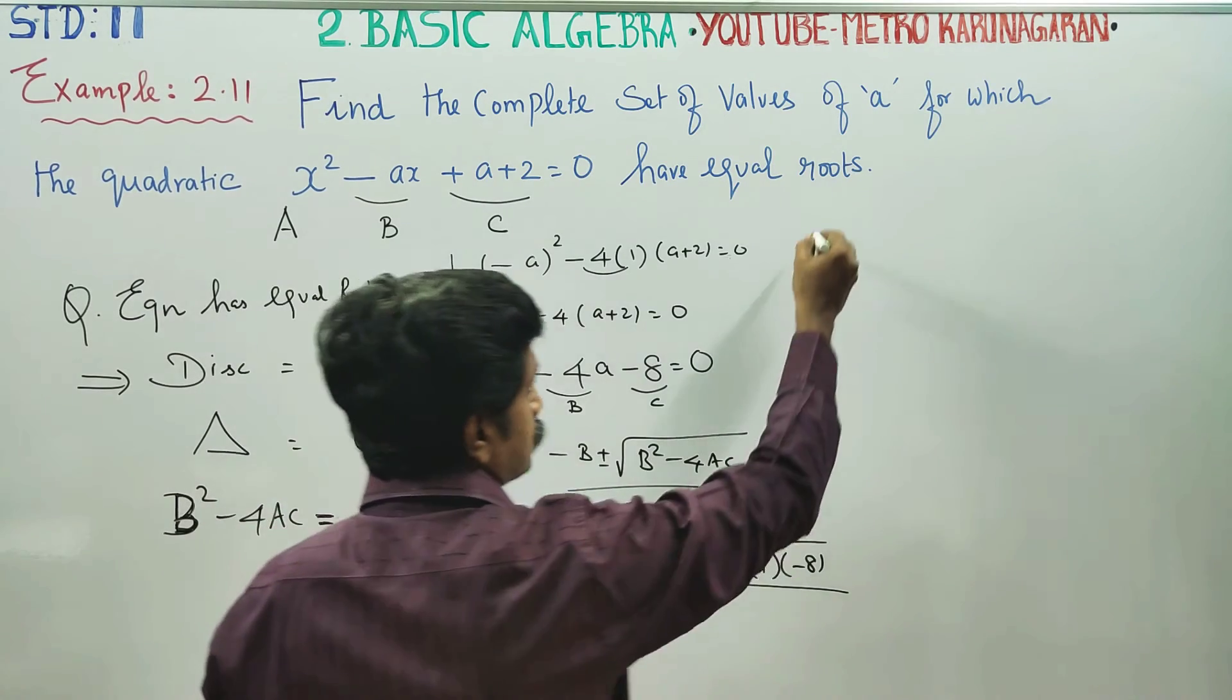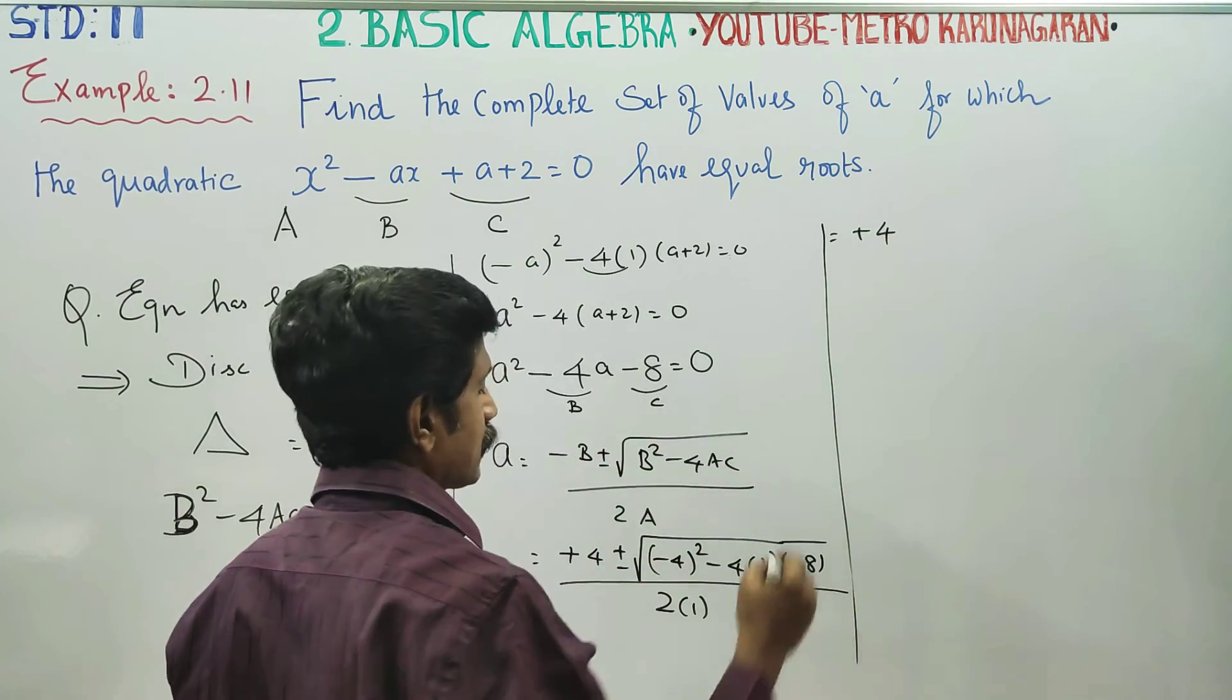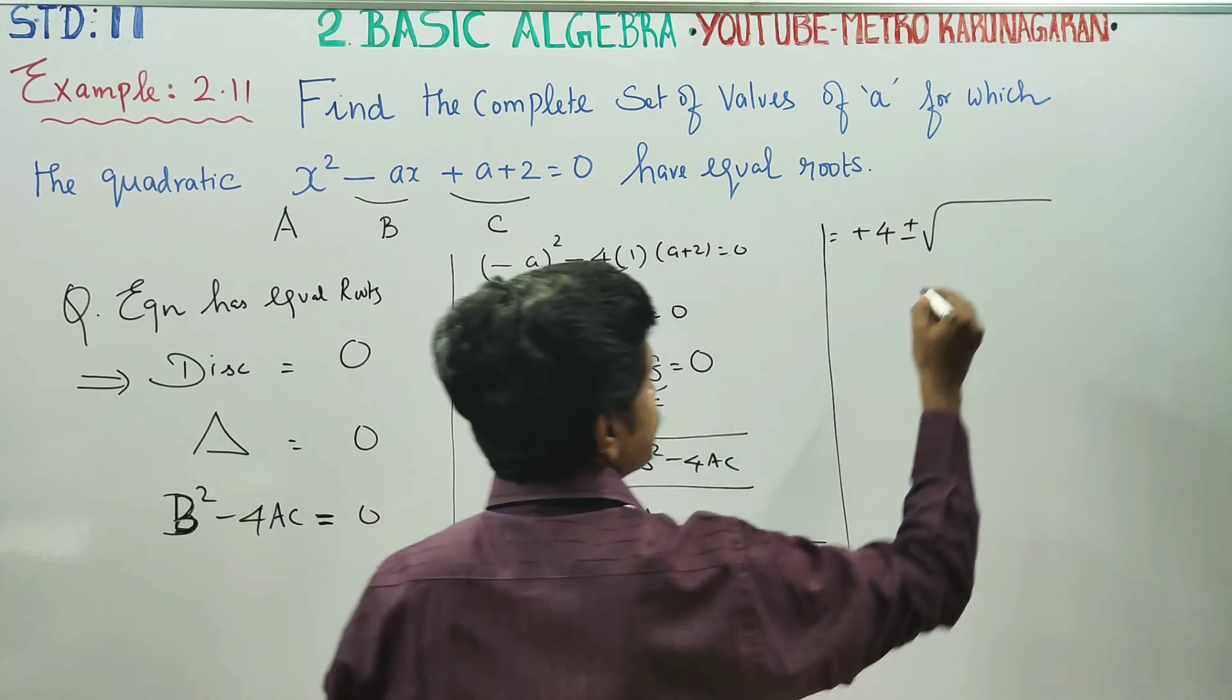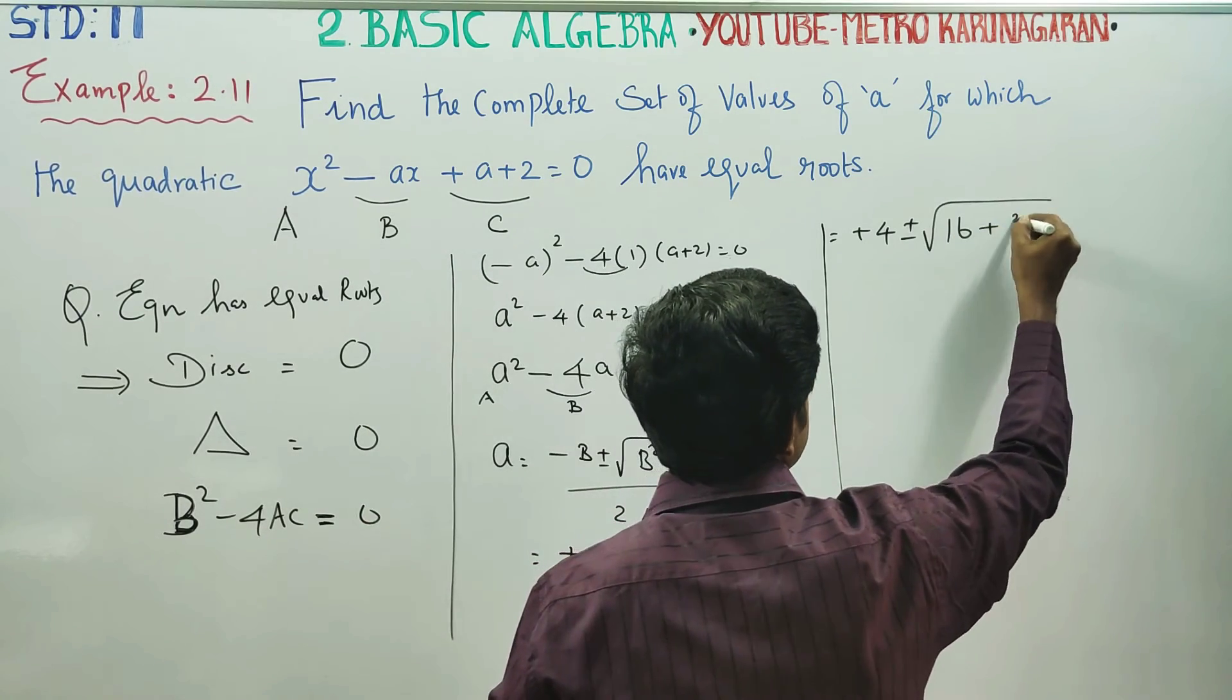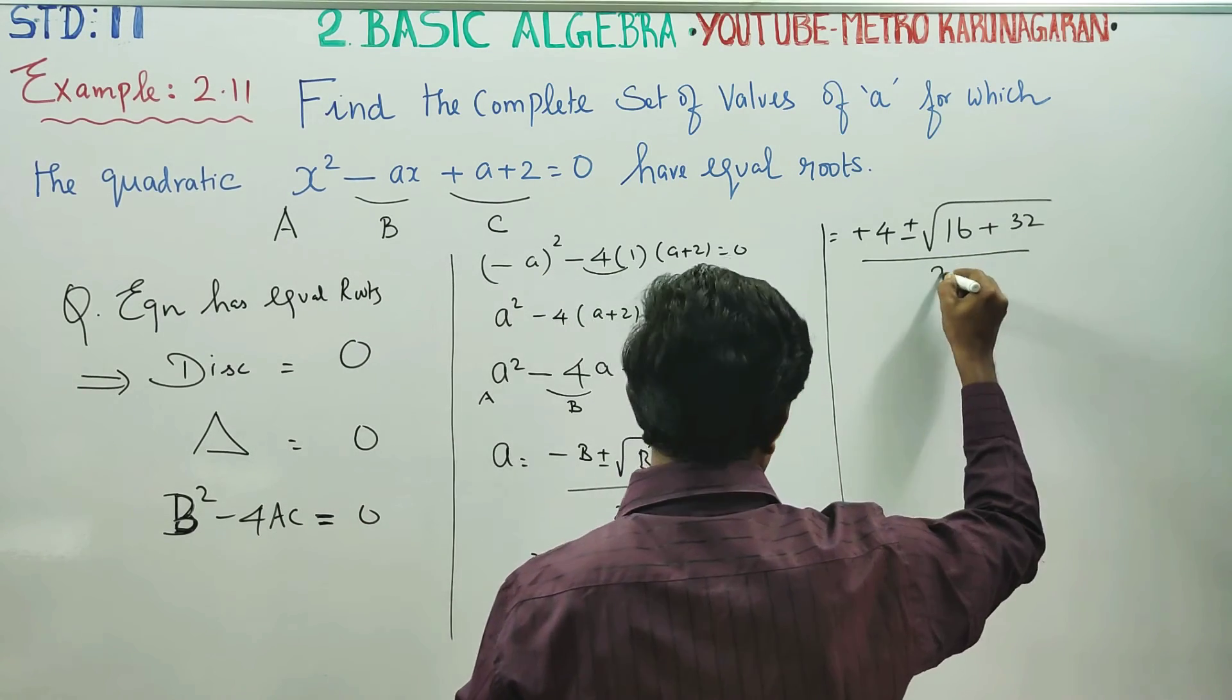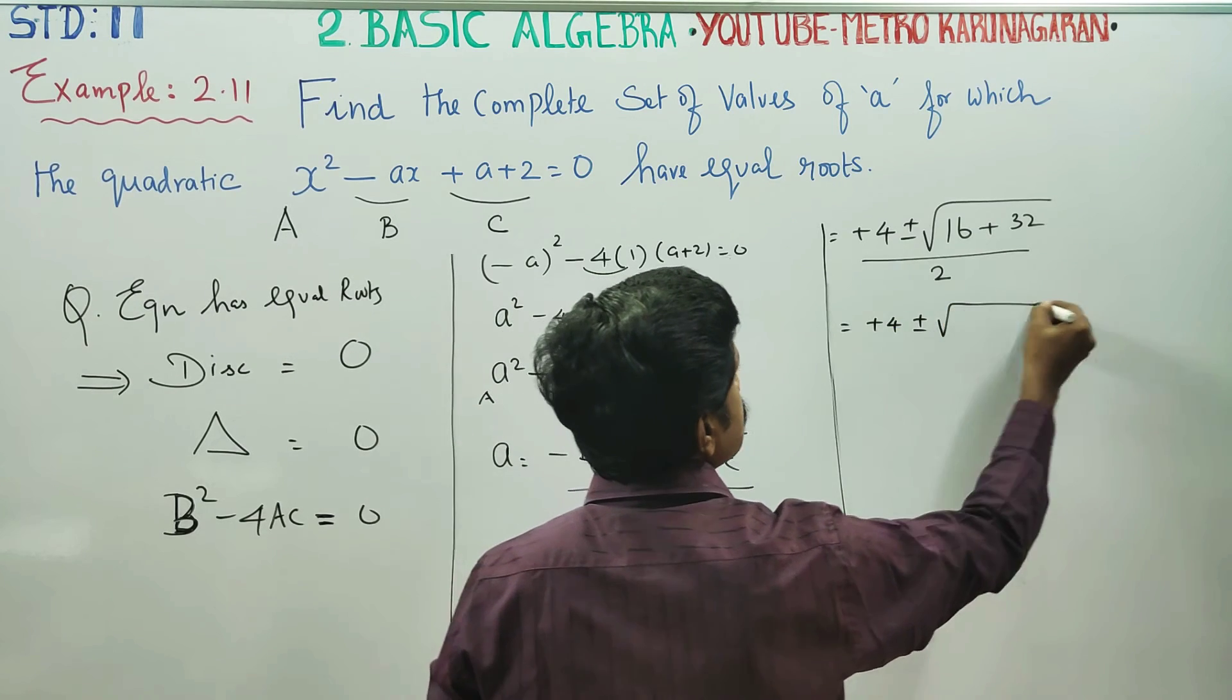Plus 4, plus or minus 4 square root of 16. 16 minus into minus is plus, 4 eights are 32 by 2. Plus 4 plus or minus.